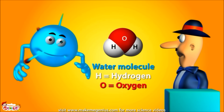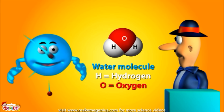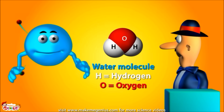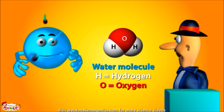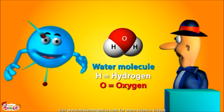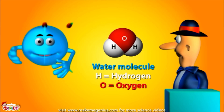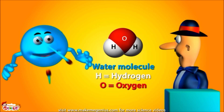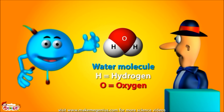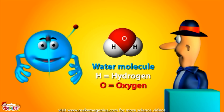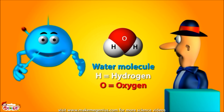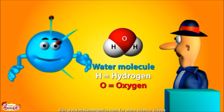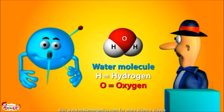Look at this. Water is made up of water molecules, but water molecules are made of atoms — there are two atoms of hydrogen and one atom of oxygen in each water molecule. So when atoms join together they form a molecule, and when molecules join together they form a thing.